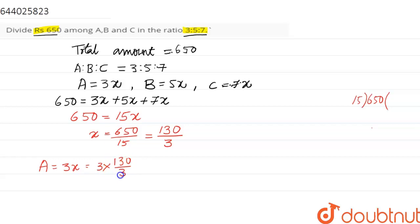Now let us calculate the amount received by B. B receives an amount of 5 into x, that is equal to 5 into 130 by 3. Simplifying this, we get the value of 216.67.